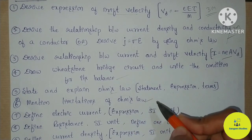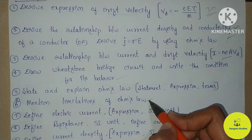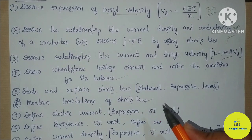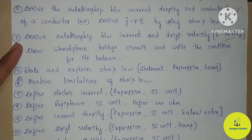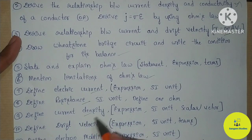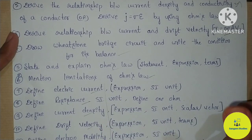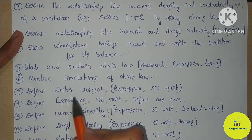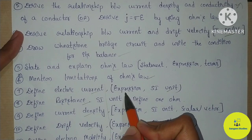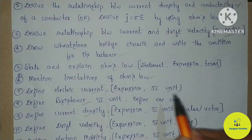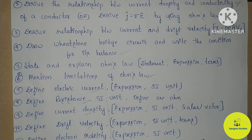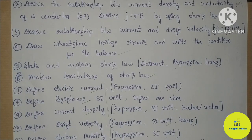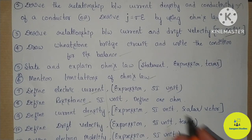Mention the limitations of Ohm's law — you can write this in the first question paper. Also, 5 important terms to know: electric current, resistance, current density, drift velocity, and electron mobility. For each of these 5 terms you can write a definition, an expression, and the SI unit. Definition is 1 mark, expression is 1 mark, and SI unit is 1 mark. So for each term: definitions, expression, SI unit.